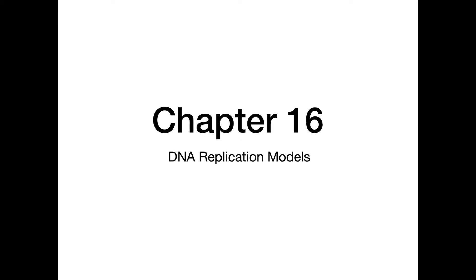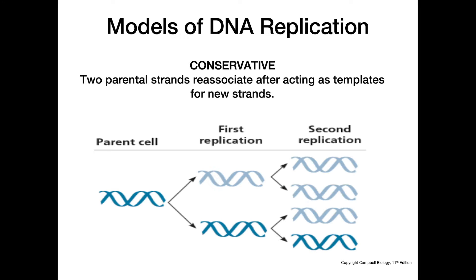This video is going to be about the different models of DNA replication. The first model we're going to look at is the conservative model. In the conservative model, the idea was that two parental strands would reassociate after acting as templates for new strands.